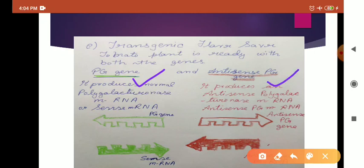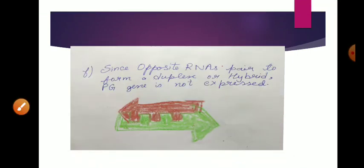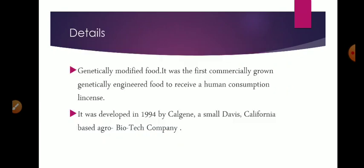The PG production will form the sense mRNA and the antisense PG gene will form antisense mRNA. After that, the opposite RNAs pair to form a duplex or hybrid, and as a result the polygalacturonase enzyme will not be formed because the mRNA has been checked.